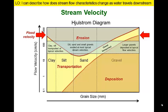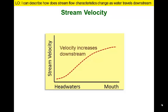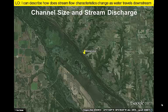If we measure the velocity of stream flow along the length of a river, we would discover that velocity steadily increases as the river flows downstream. This is due to a variety of factors, chief among them the increase in channel size and decrease in the roughness of the channel.